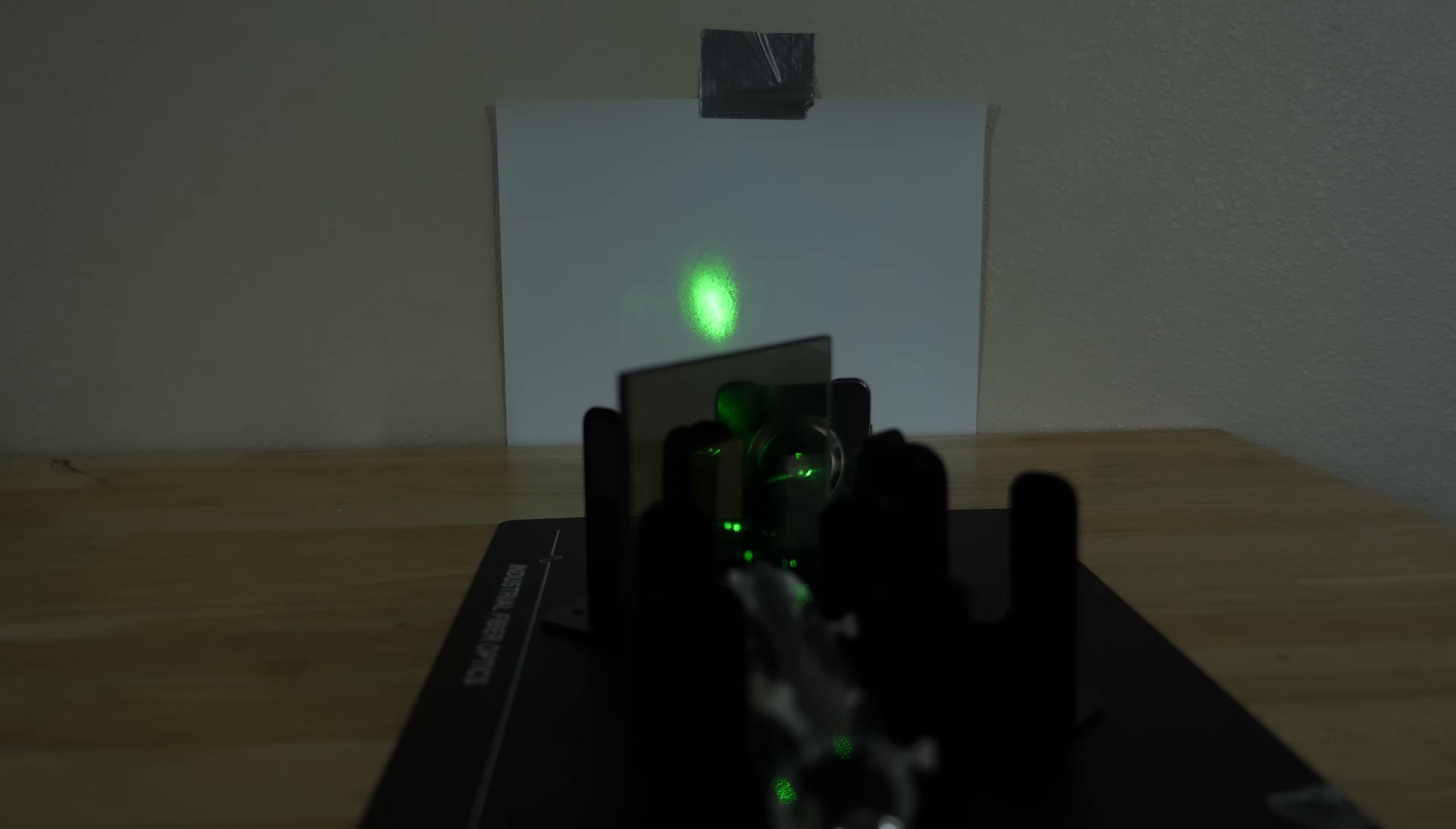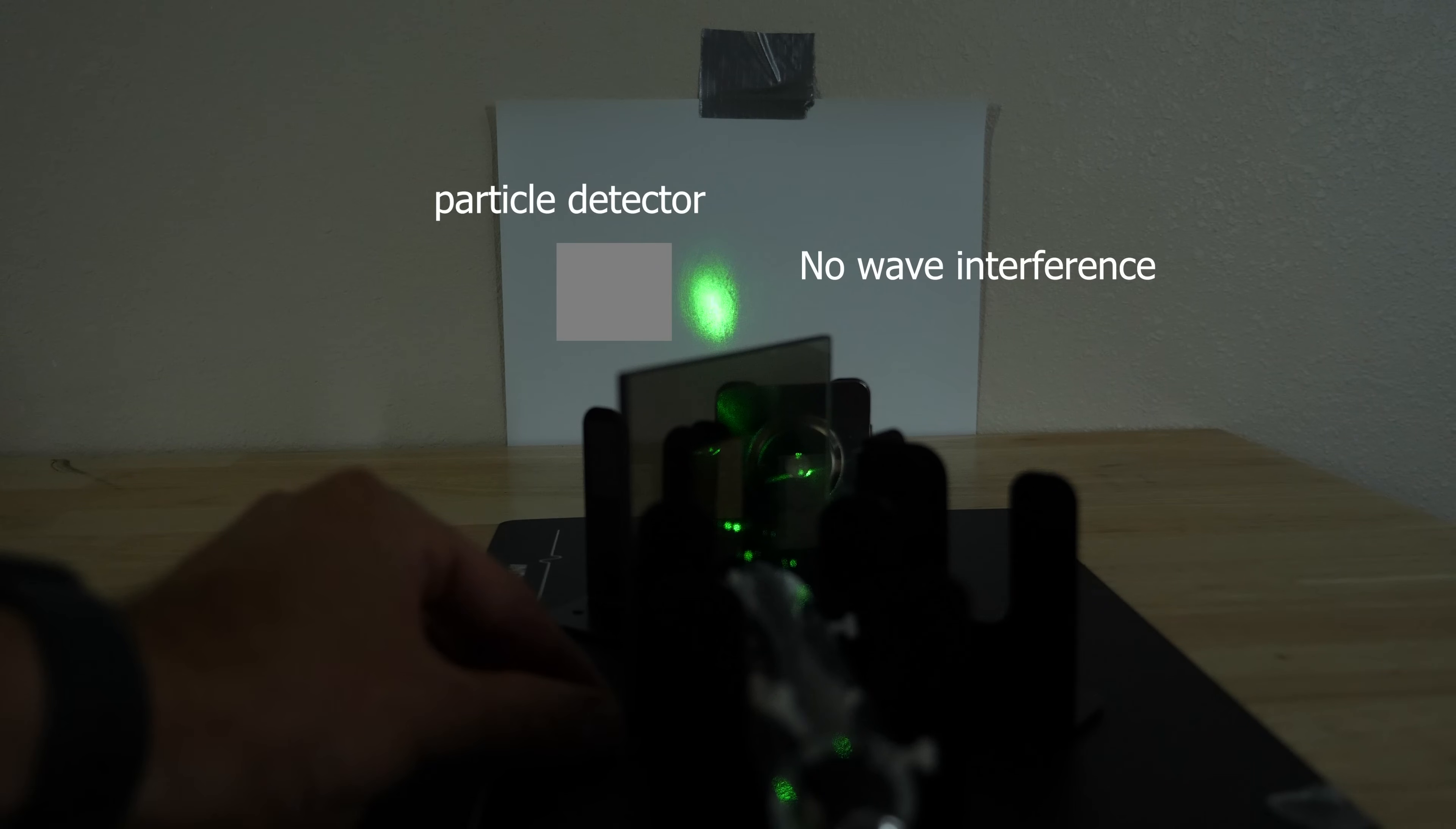And we can actually stick a particle detector right here. Whenever the light hits the particle detector, it only becomes whole pieces of light, or photons as we call them. There's never a half a photon that hits the particle detector. So we know that whenever we see the light with a particle detector, it always comes in discrete little packets that we call photons.